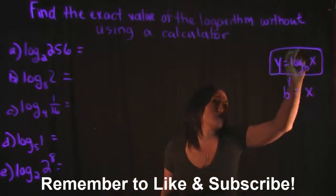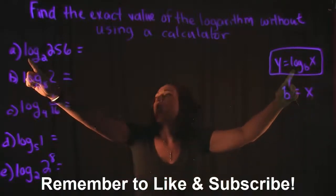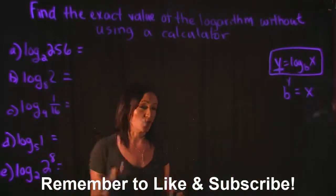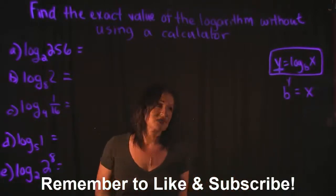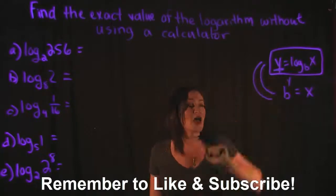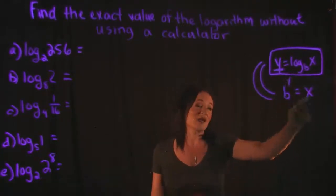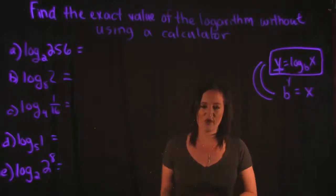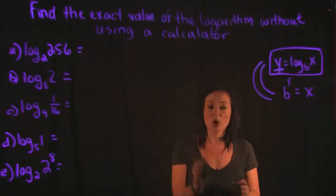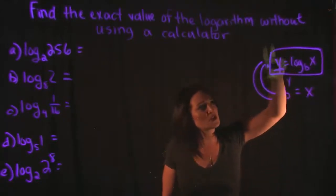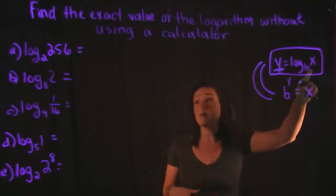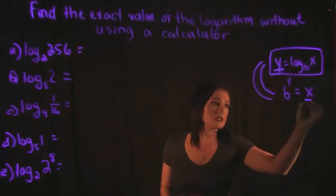The way that these examples are set up is they are in logarithmic form. This top equation has a log of a base of X, and what we're trying to figure out is what Y is equal to. A way to do that is to think of this in reverse. These two equations are equal to each other: Y = log base B of X is the same thing as B to the Y = X. So the question in your head is: B to what power is equal to your X?